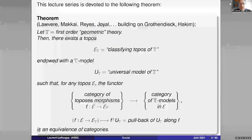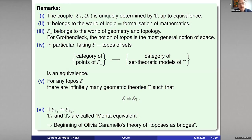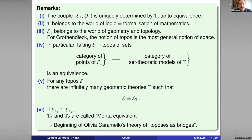Before I begin with the explanation, I want to make a few remarks. The first remark is that given such a theory T, its classifying topos endowed with a universal model of T is uniquely determined up to equivalence. The second remark is that T belongs to the world of logic — logic here should not be understood as some very particular part of mathematics, but rather as the formalization of mathematics, the linguistic presentation of mathematics. Anytime we do mathematics, we begin by presenting one or several theories, using the language of logic even if we don't think about it.